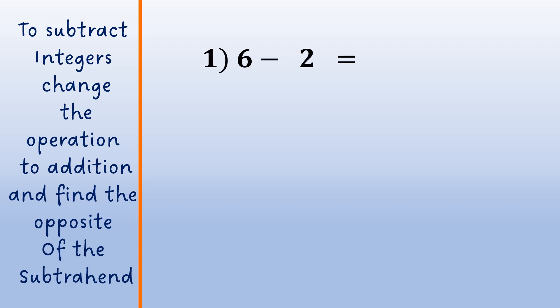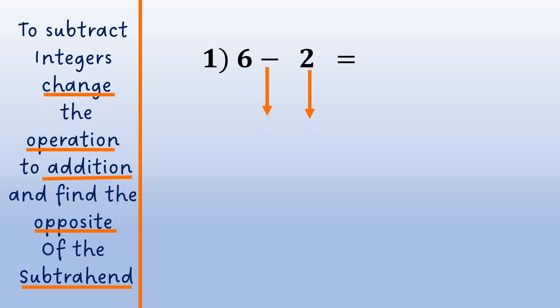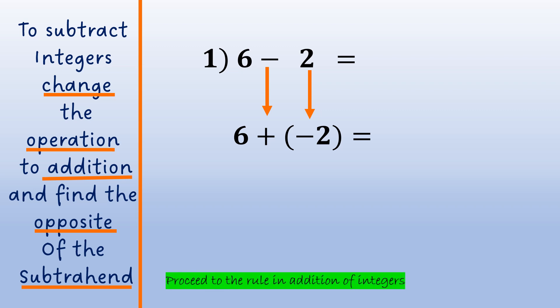Example number 1: positive 6 minus positive 2. We change the operation to addition and find the opposite of the subtrahend. The minuend 6 stays the same. Change the operation to addition, and the opposite of positive 2 is negative 2. Then proceed to the rule in addition of integers.